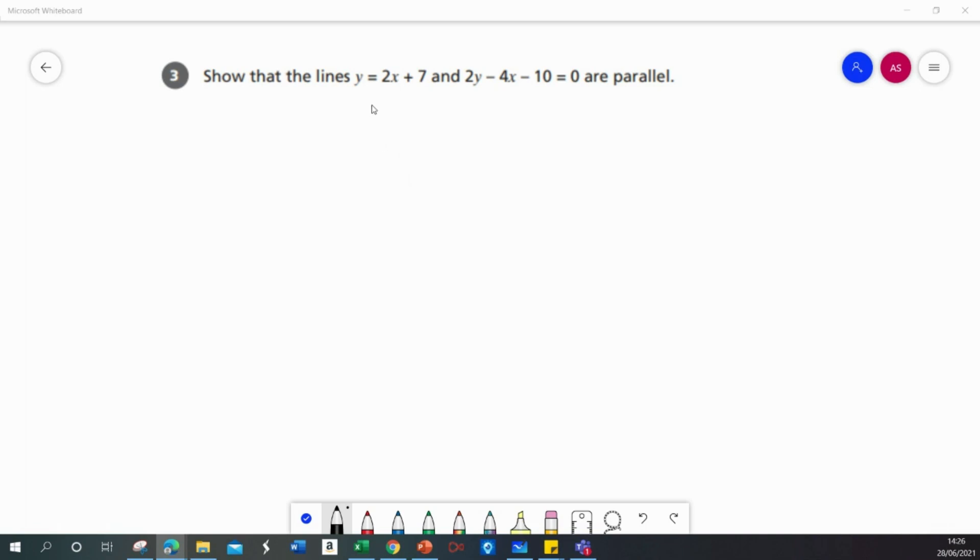In this question we need to show that the lines y equals 2x plus 7 and 2y minus 4x minus 10 equals 0 are parallel. That means we've got to show that they have the same gradient.